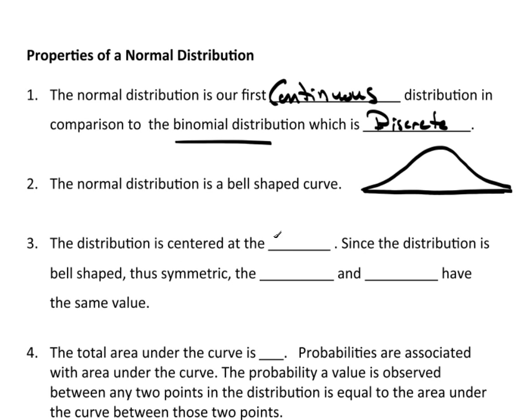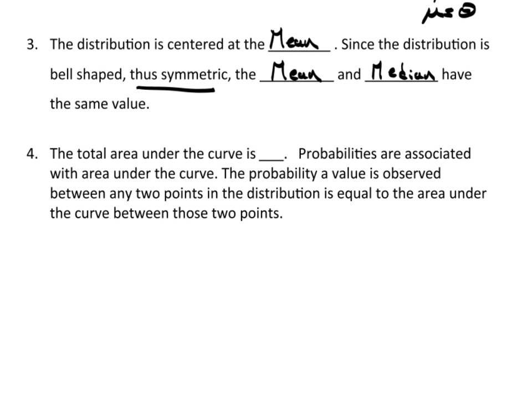The distribution is centered at the mean. So right down the middle is mu. And since the distribution is bell-shaped, hence it's symmetric, both the mean and the median have the same value. So the mean and the median are both right smack down the middle. That's an equal sign right there. It didn't come out really good.